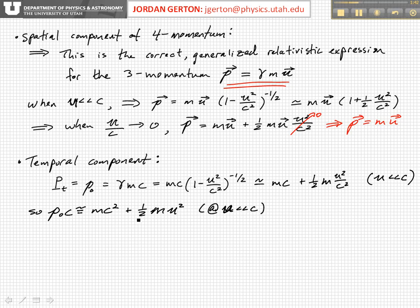What you may recognize here is that this looks very much like the kinetic energy. In fact, p sub 0 c is equal to gamma mc squared, which is approximately equal to mc squared plus 1 half mu squared. Then we see that gamma minus 1 times mc squared is the kinetic energy.